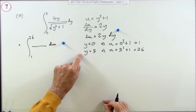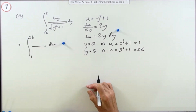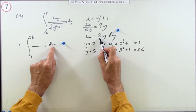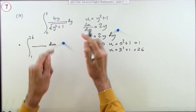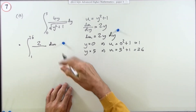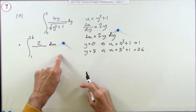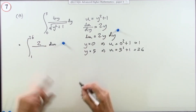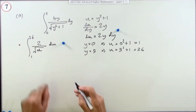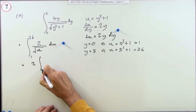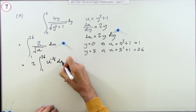Finding the new limits normally earns its own mark. Now I need to find a 2y dy in the integrand — 4y is actually two times 2y dy, so the 2y coming out leaves a 2. The cancellation method saves doing this in your head: if you'd written du over 2y, the 2y's just cancel. This gives 2 over the square root of u, earning the next mark.